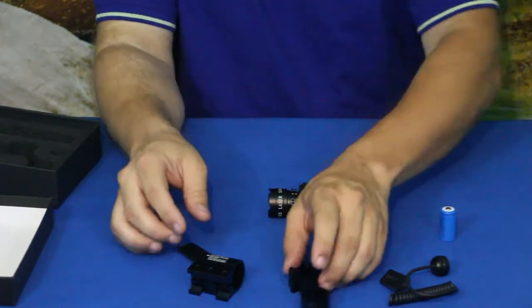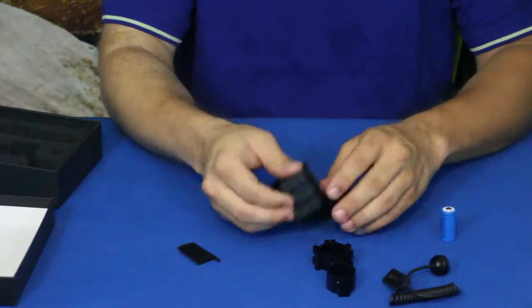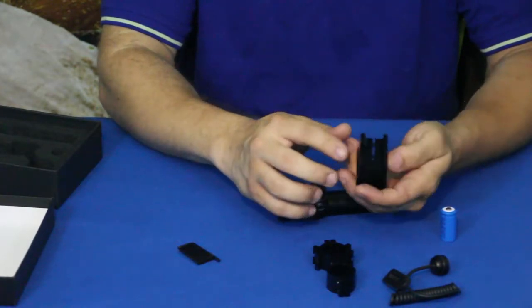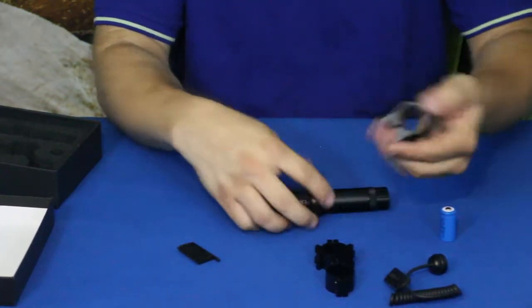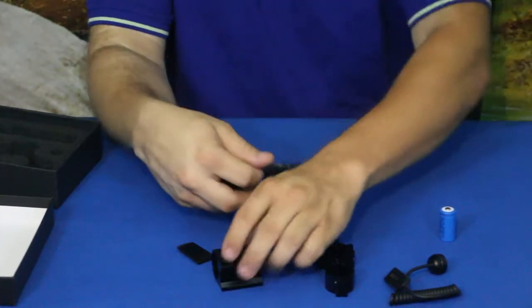It comes with a couple of different mounting options. We've got an option for using on a rail system of some type, and you can just slide that in there and mount it onto your rail.